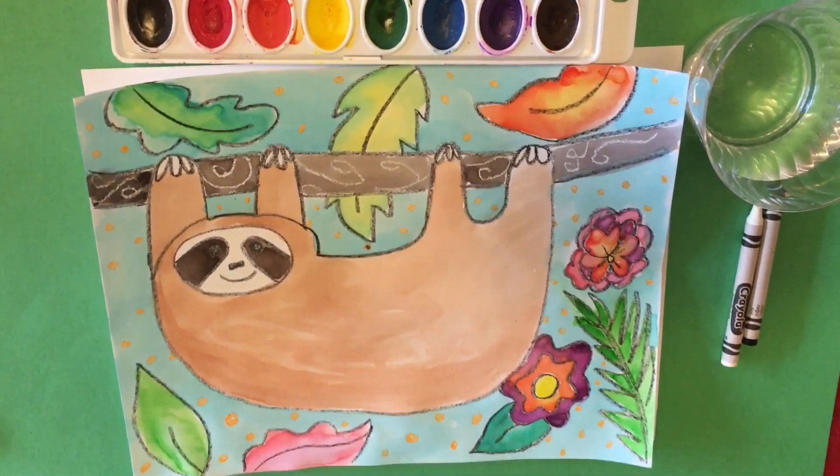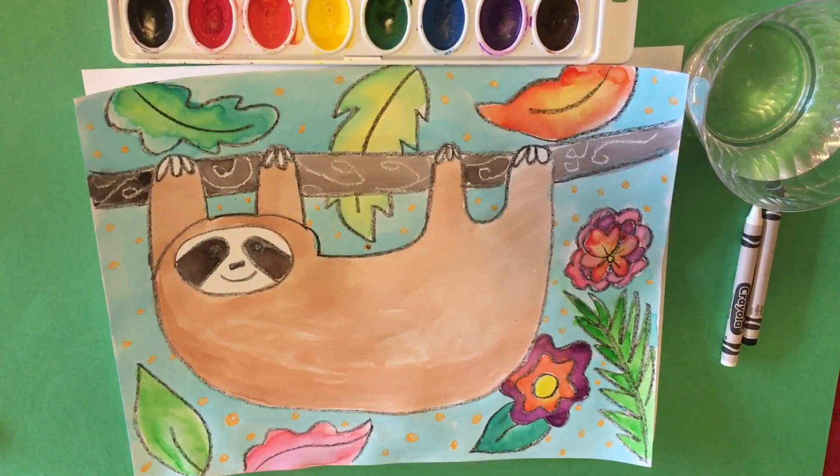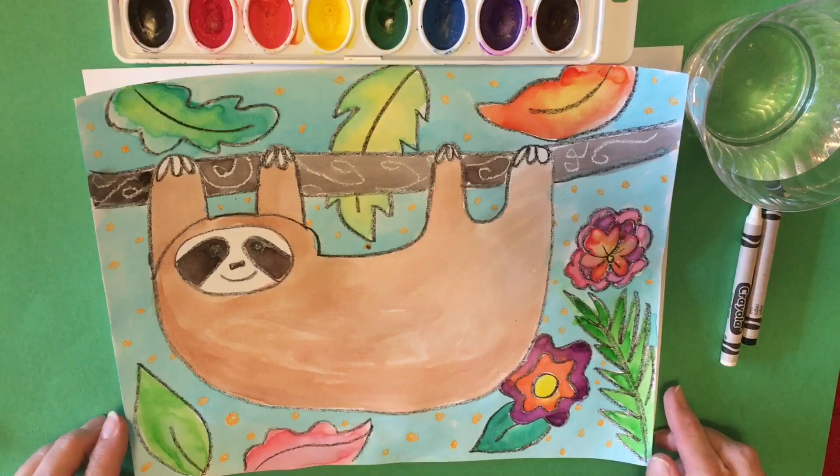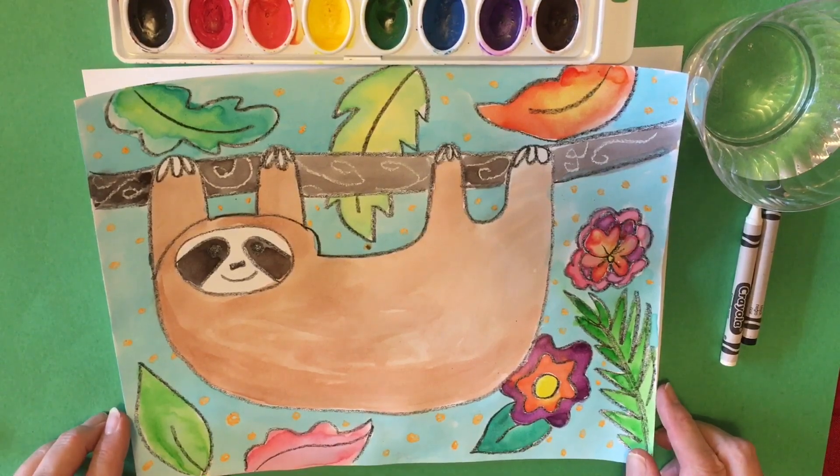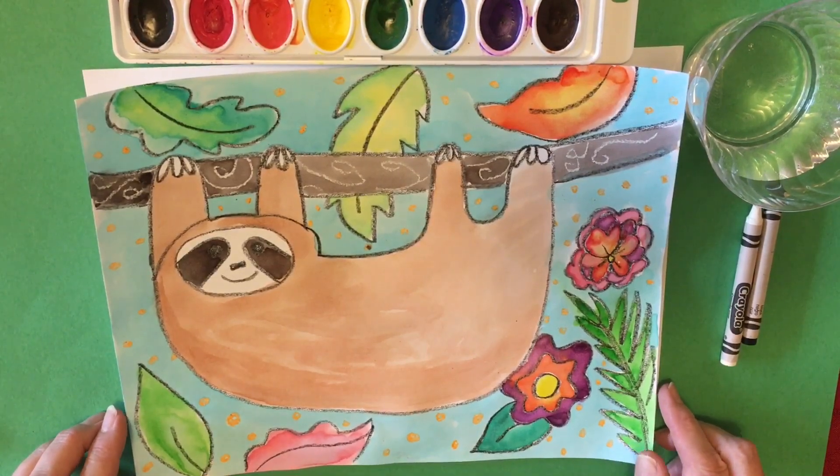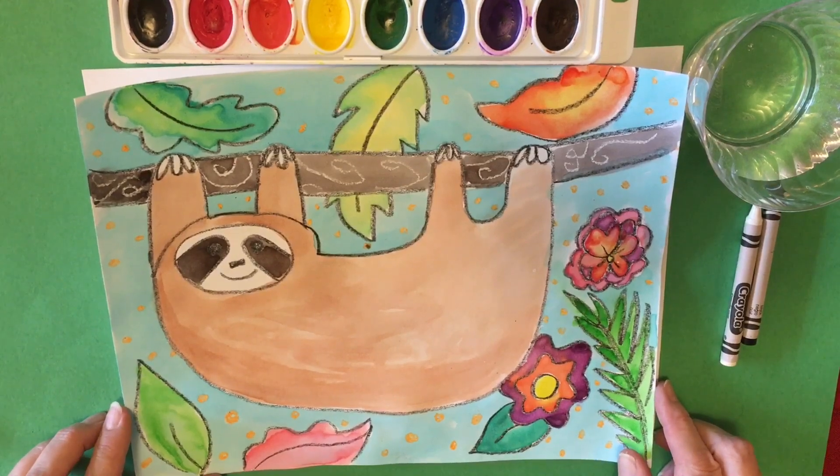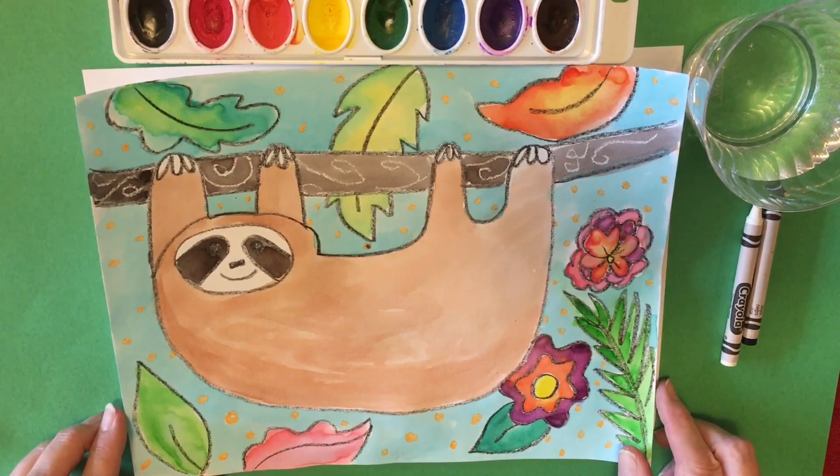Three-toed sloths are the slowest mammal on the planet and they are part of the bradypus family. They're called a bradypus. Isn't that funny? So this is my little bradypus here, the three-toed sloth.